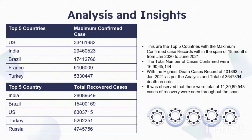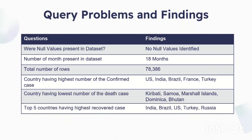These were the insights found throughout the analysis. Regarding query problems and findings: while applying various SQL queries, a few key insights were found. No null values were identified in the dataset. There were 18 months of data recorded while tracking coronavirus records. The total number of rows present in the dataset was 78,386. The countries having the highest number of confirmed cases were US, India, Brazil, France, and Turkey. The countries having the lowest number of death cases were Kiribati, Samoa, Marshall Island, Dominica, and Bhutan.